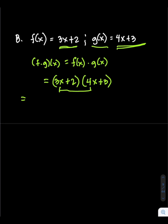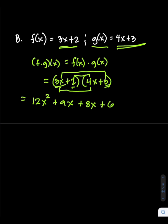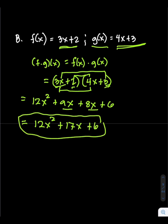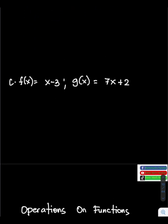Using FOIL — First: 3x times 4x gives 12x squared. Outer: 3x times 3 gives 9x. Inner: 2 times 4x gives 8x. Last: 2 times 3 gives positive 6. Combine like terms: 12x squared, then 9x plus 8x gives 17x, plus 6. So the final answer is 12x squared plus 17x plus 6.